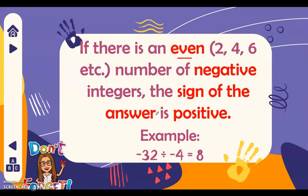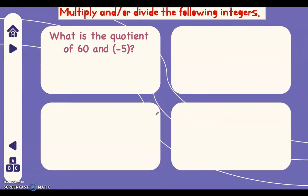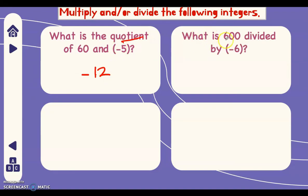So multiplication and division of integers have the same rules. Let's have more examples. What is the quotient of 60 and negative 5? The quotient is the answer in division. We divide 60 by 5, which is 12. There is only one negative integer, so the sign is negative. Next, what is 600 divided by negative 6? 600 divided by 6 is 100. There is only one negative integer — it's odd — therefore the sign of the answer is negative 100.